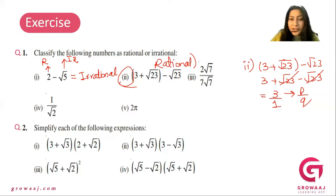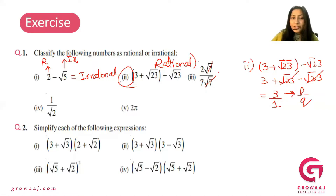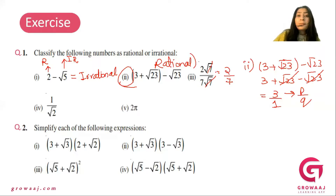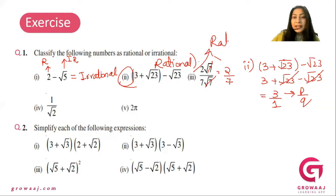Similarly, part 3 is 2 into square root of 7 divided by 7 into square root of 7. The square root of 7 cancels, so you have a result of 2 by 7, which you can write in P by Q form — which is a rational number.